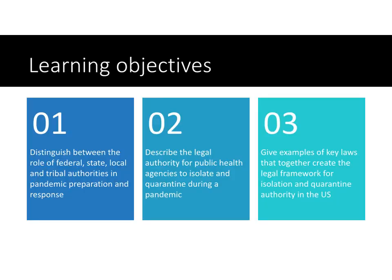By the end of this lecture, you should be able to distinguish between the role of federal, state, local, and tribal authorities in pandemic preparation and response; describe the legal authority for public health agencies to isolate and quarantine during a pandemic; and give examples of key laws that together create the legal framework for isolation and quarantine authority in the United States.